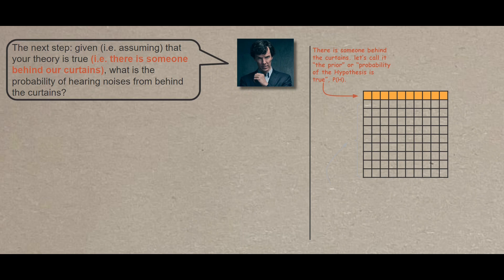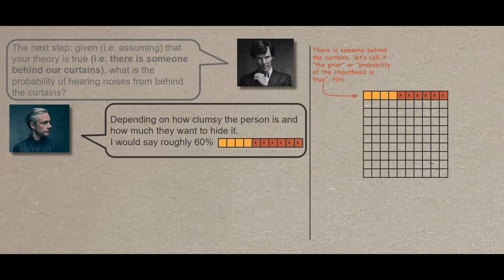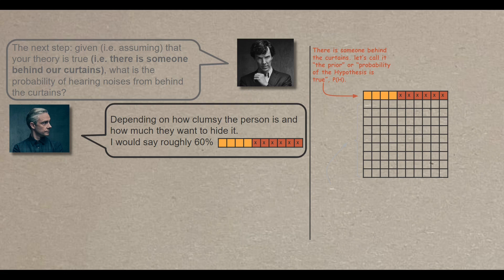The next step, given that theory is true that there is someone behind our curtain, what is the probability of hearing noises from behind the curtains? Well, depending on how clumsy the person is and how much they want to hide it, I would say roughly 60%. So what Watson says here is that let's assume that there is someone behind the curtains, the probability of that person making any noise is about 60%. Now notice that this 60% is 60% out of the 10%, which is very slim.